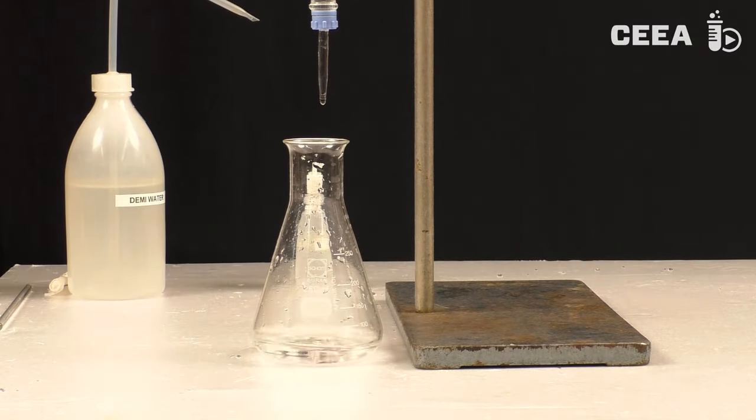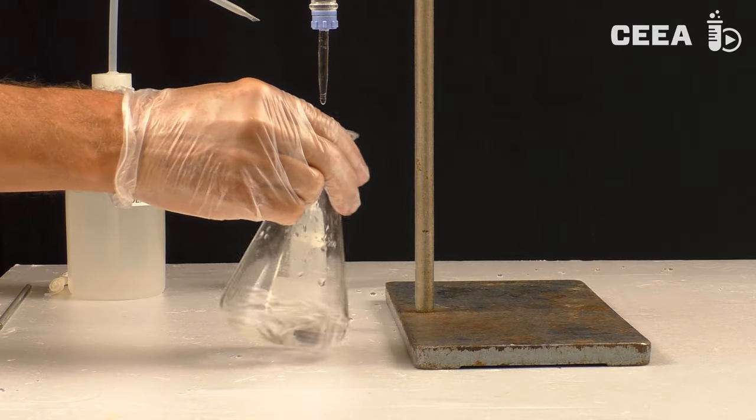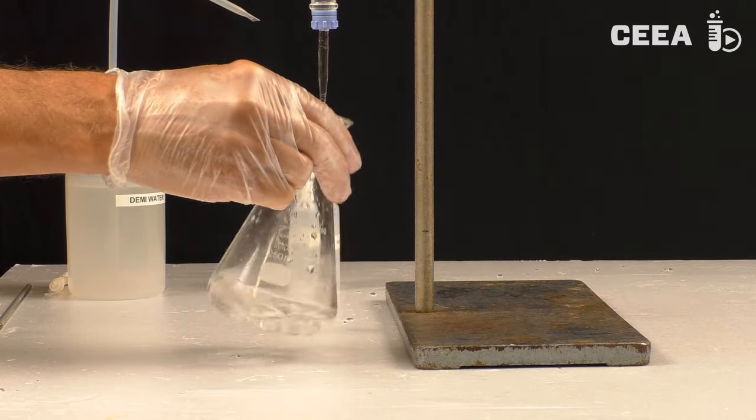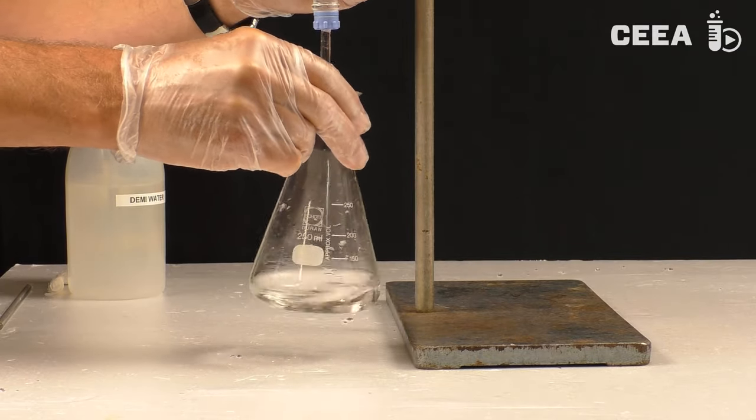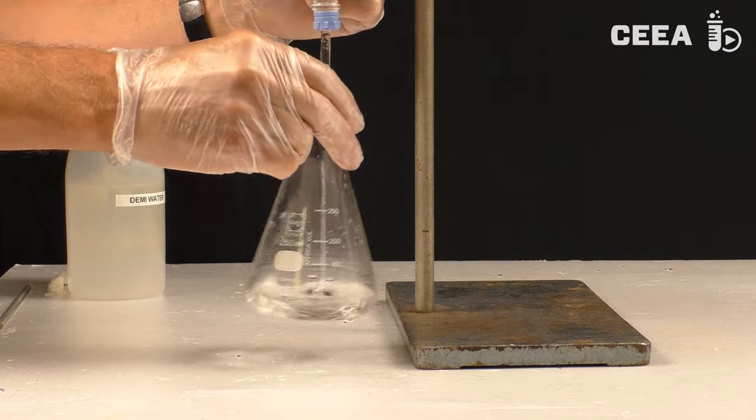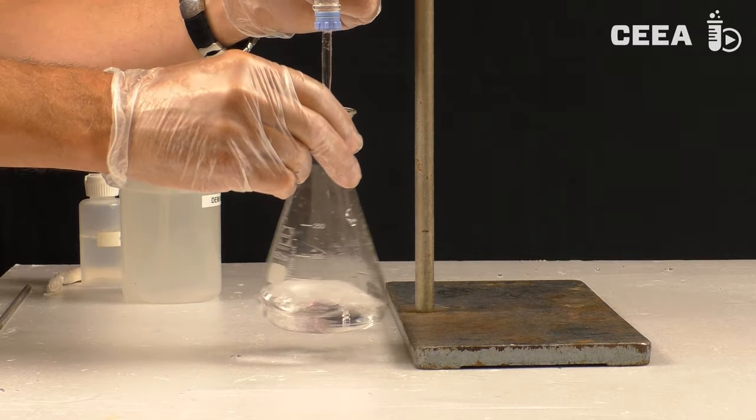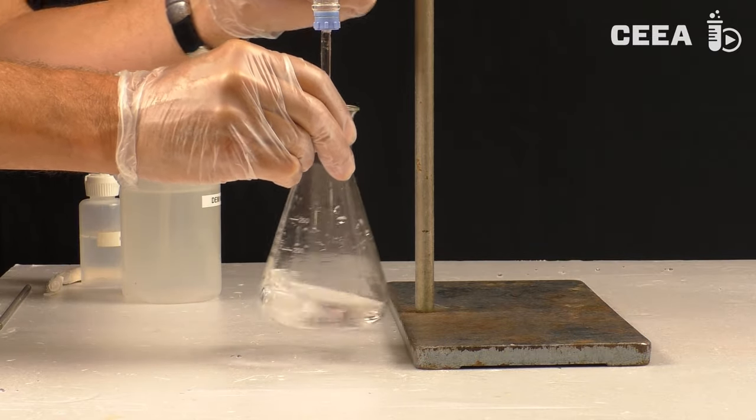Now we write down the initial volume of titrant and start titrating drop by drop. A mechanical stirrer can be used or we have to swirl gently. We have to proceed until a drastic change of colour is observed. The change has to be stable for at least 10 seconds.